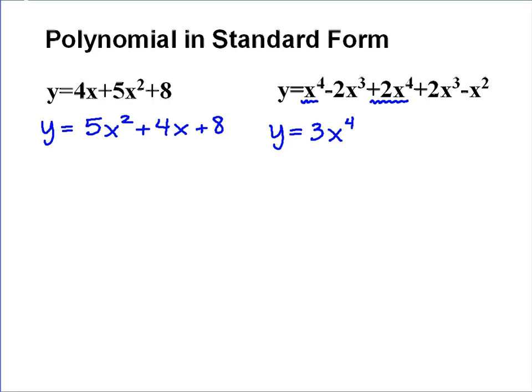Then I'm looking through for the next lower power, and my next lower power is 3. There are actually two terms that have x to the third. This is negative 2x to the third, and this is plus 2x to the third. When I add those together, I actually get zero.